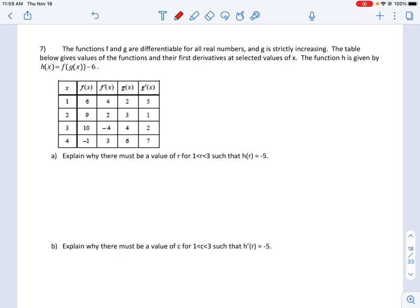We're given a table of values for f, f prime, g, and g prime. It tells us that f and g are differentiable, which also means f and g are continuous. Remember, if two functions are differentiable, the slope exists and it has to be a continuous function. It also tells us that g is strictly increasing.